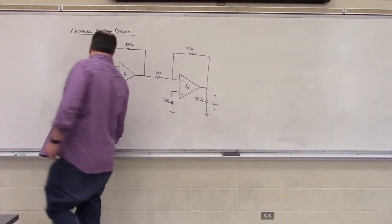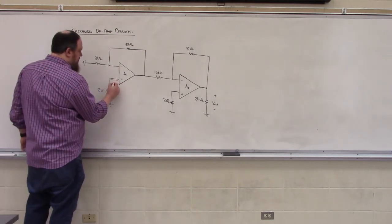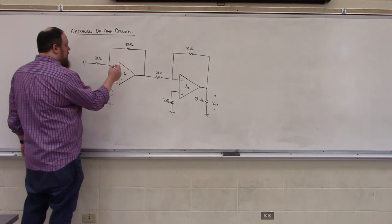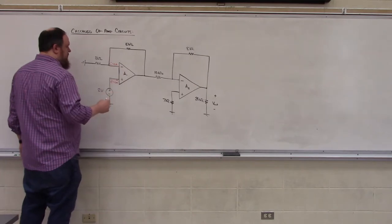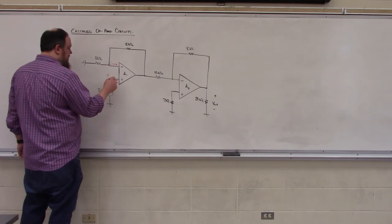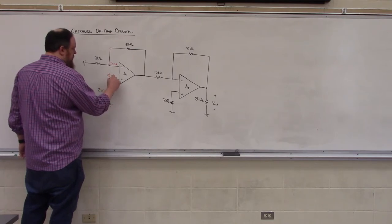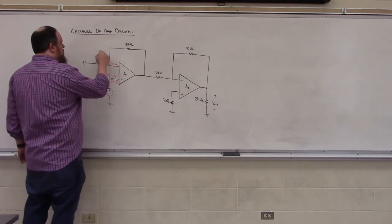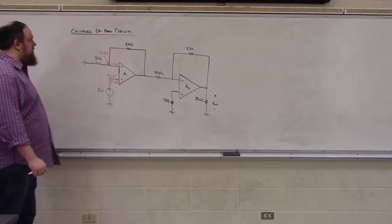We're first going to analyze the circuit by applying our ideal op amp rules. So this current, I plus 1, will be 0 amps. This current, I minus 1, will be 0 amps. This voltage, V plus 1, will be 2 volts. And this voltage, V minus 1, must then also be 2 volts.